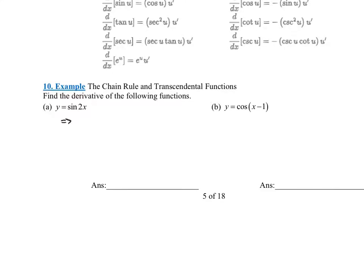The derivative of sine is cosine, so it's cosine of 2x. But we have to remember to multiply times the derivative of 2x. The derivative of 2x is 2, and that 2 belongs out in front. So y prime equals 2 cosine of 2x.